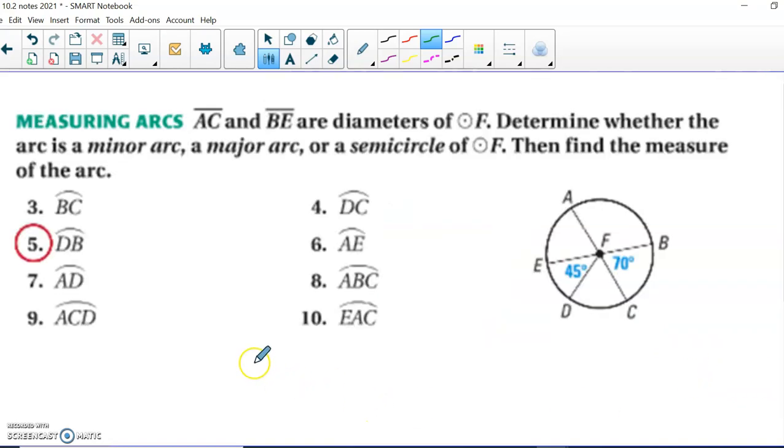All right, let's practice. First of all, they tell you that AC and BE are diameters. You shouldn't assume that two radii are diameters. They should have to tell you that. So just so we can see that, I'm going to go ahead and label that. So they're telling us this is a diameter and this is a diameter. How does that help us? We know a semicircle is 180. So I'm just going to find all the missing pieces and then we'll answer their questions. So I'm going to take 180 minus the 45 minus the 70. That's 115. So we know that this missing piece here is 65.